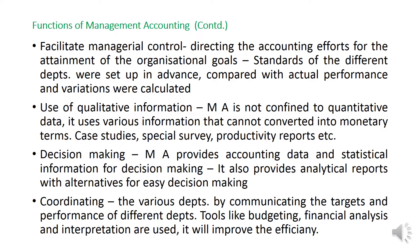Next is coordinating. There are different departments in an organization — production department, finance department, marketing department. The activities of all departments need to be coordinated. For example, the sales department data is collected first to determine how much they can sell; only based on that is it decided how much to produce. Coordinating means aligning the activities of different departments.